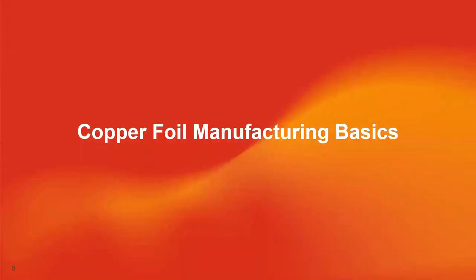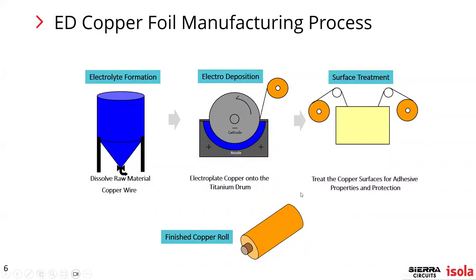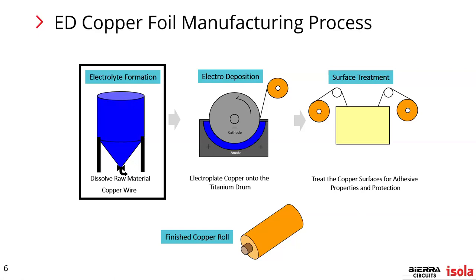For basic foil manufacturing, there are three major processes. First, they create the electrolyte using raw copper wire — all recycled materials. One of the questions we've been getting is about sustainability: copper foil is made from all recycled copper. Next is plating on the drum, using a titanium drum polished to give a very smooth surface. Then they do surface treatments, applying several different coatings to create the finished copper roll. For battery foil, these surface treatment processes are not used the same way as for PCB manufacturing copper foil.